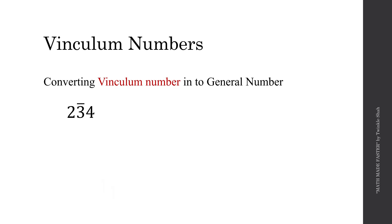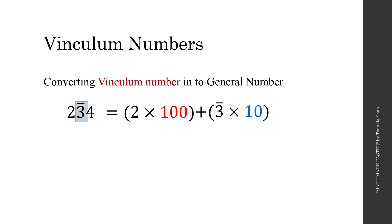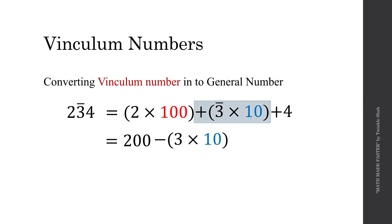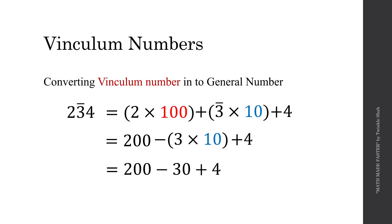Let's do another example. We want to convert 2 3̄ 4 into a general number. This can be rewritten as 2 times 100 plus 3̄ times 10 plus 4. Simplifying: 2 times 100 equals 200, and 3̄ times 10 can be rewritten as negative 3 times 10. So we have 200 minus 30 plus 4, which equals 174. Therefore 2 3̄ 4 equals 174.